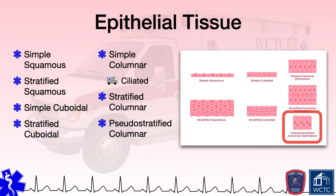Pseudostratified columnar epithelial tissue has a single layer of cells that are different heights. As a lining for the trachea, most of the upper respiratory passages and the male urethra, these tissues provide protection and also the secretion of mucus. When lining the fallopian tubes, these tissues are responsible for moving the egg toward the uterus.